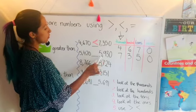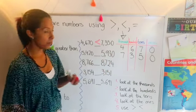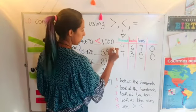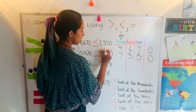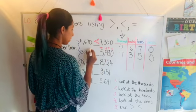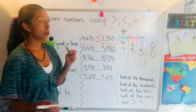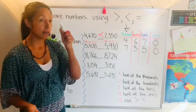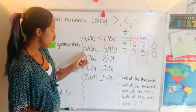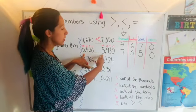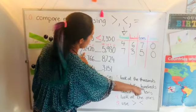5420 versus 5930. I'm not going to put it here because it's going to take us a long time, but I'm going to put here that ones, tens, hundreds, and thousands. We're going to look at the first digit, but here we have the same digit. What do we do? Look at the hundreds now.